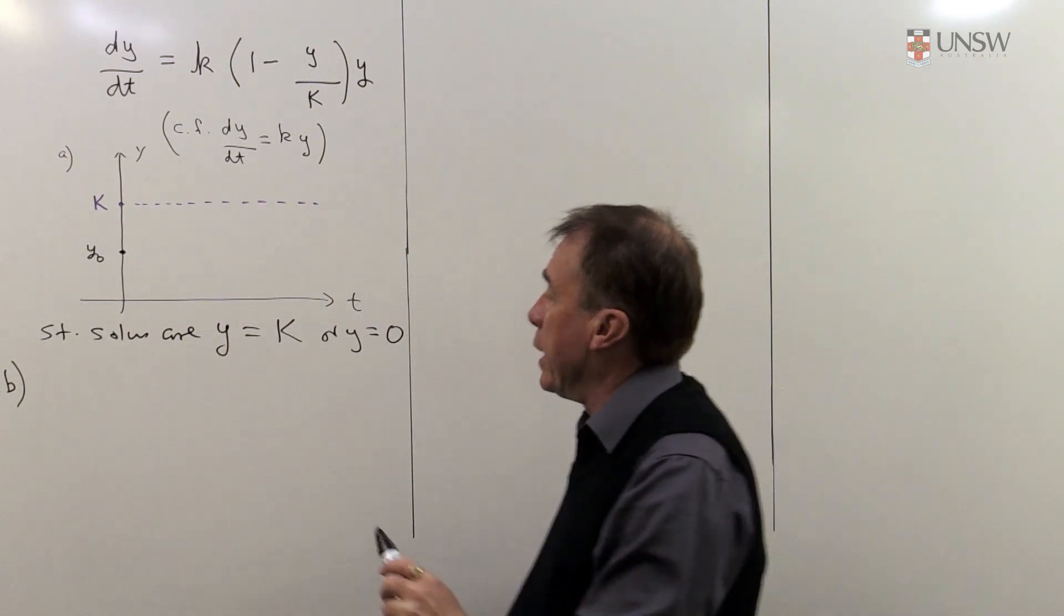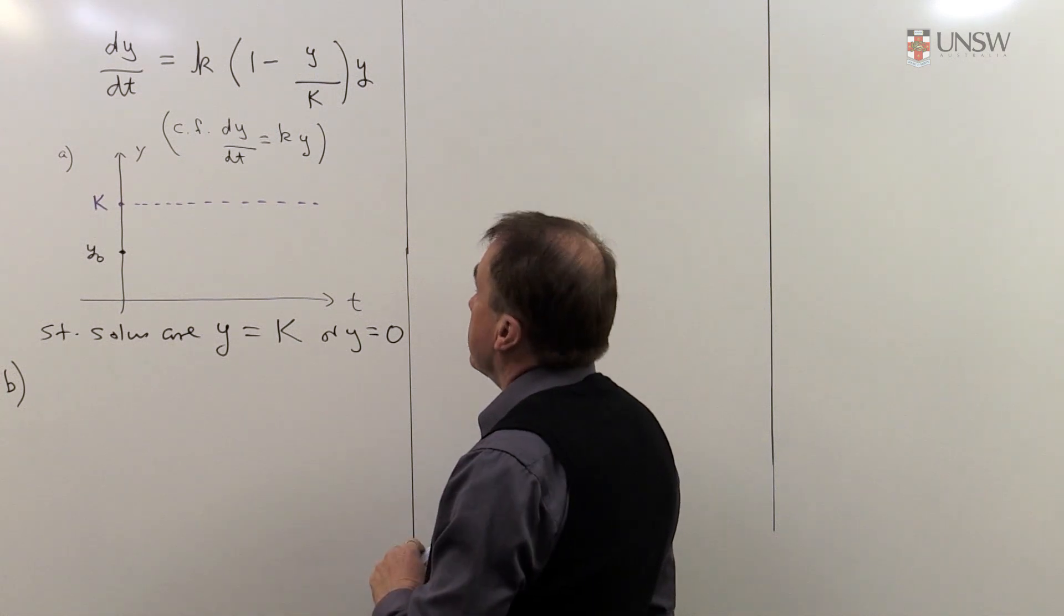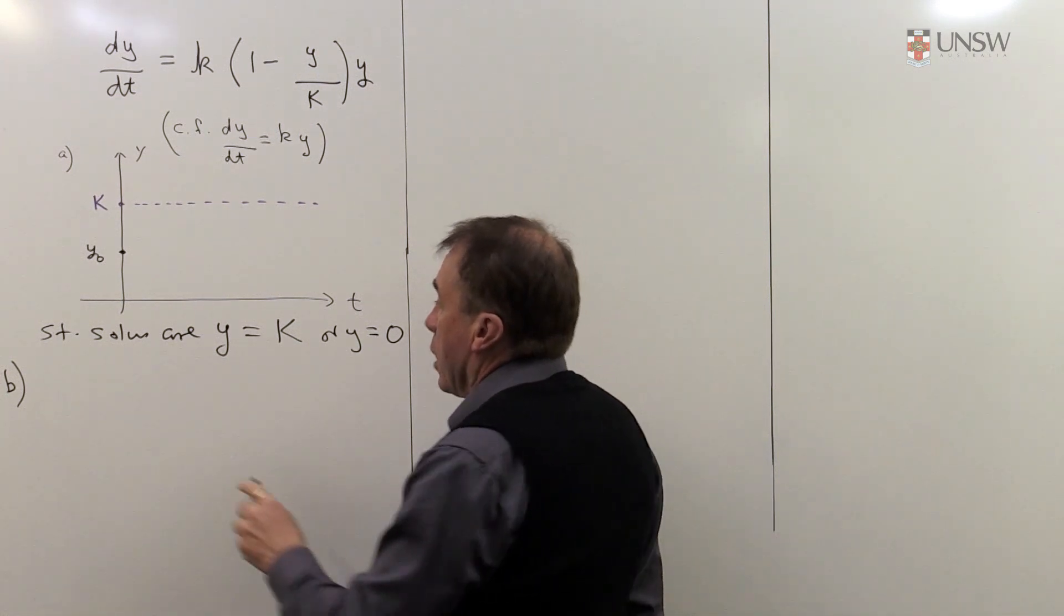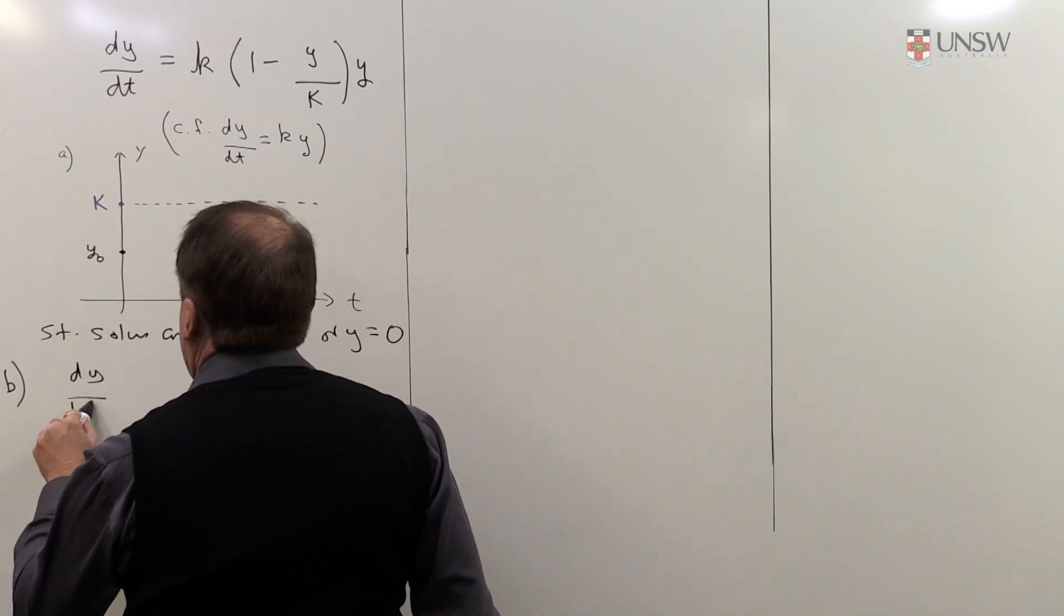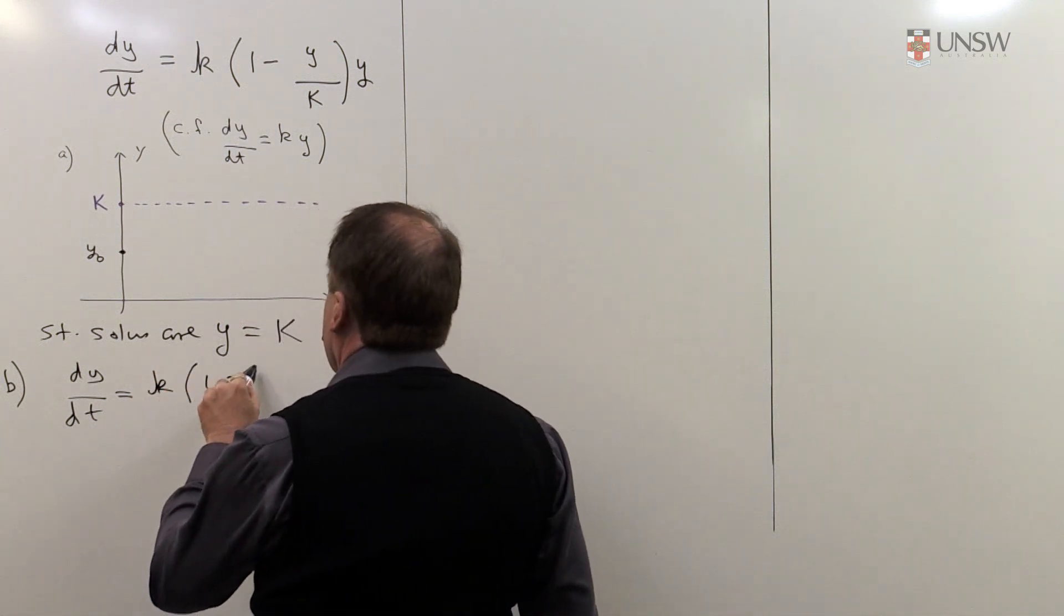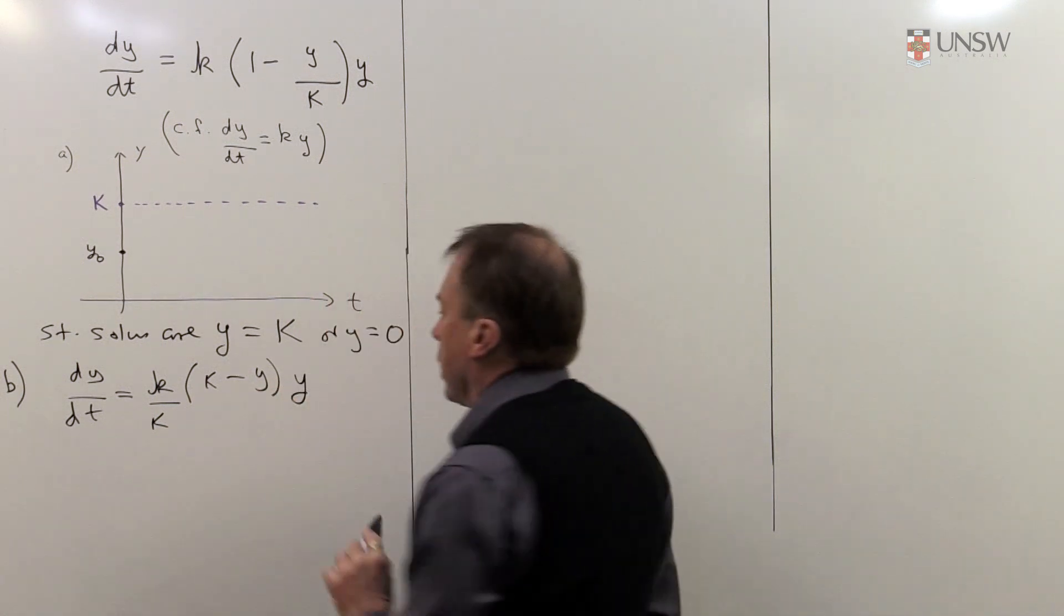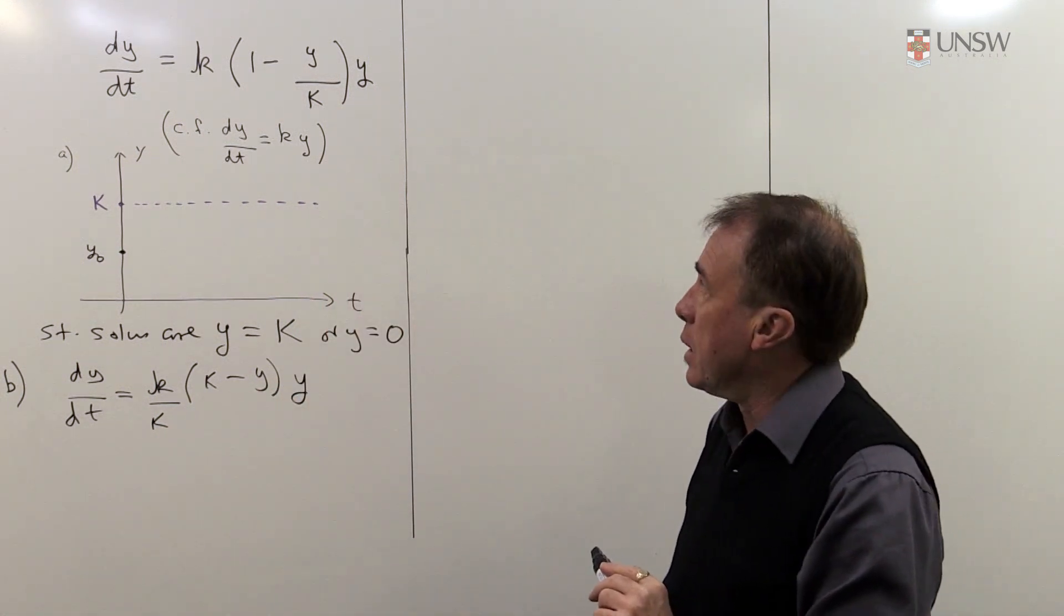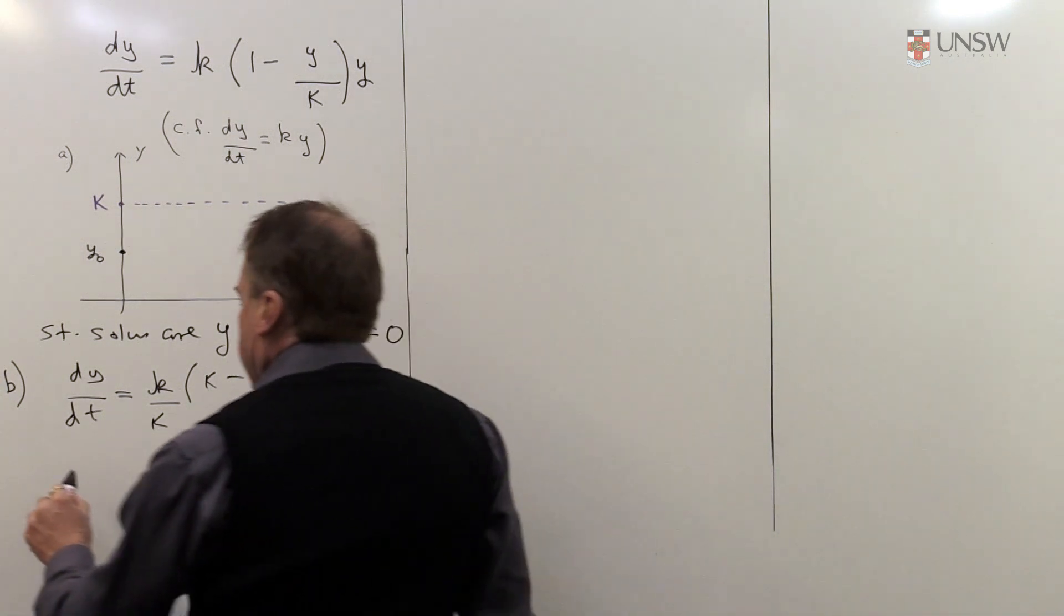So to do that, I need to get all the y's on to one side and all the other t's and so on on the other side. Well, before I do that, I'm going to just, to make the algebra a little bit easier, I'm going to put the terms in the brackets here over a common denominator. So I'm going to write it like that just to make this here a little bit easier to deal with.